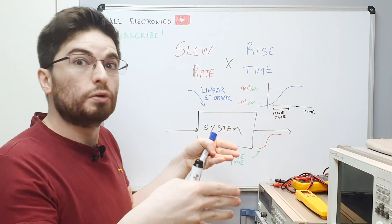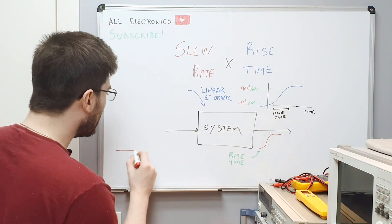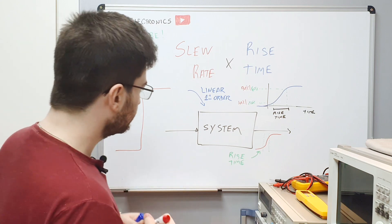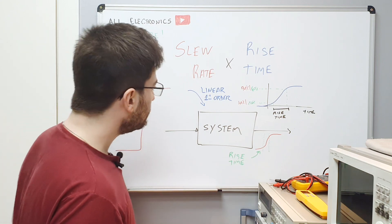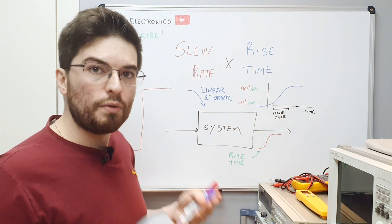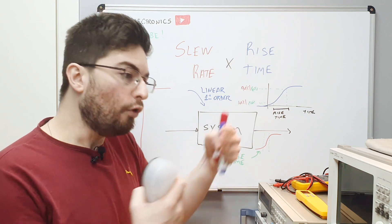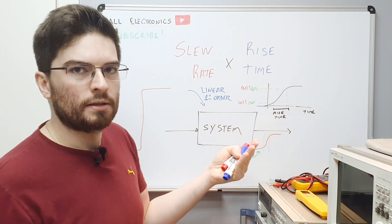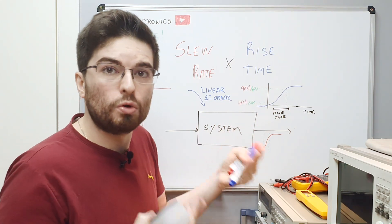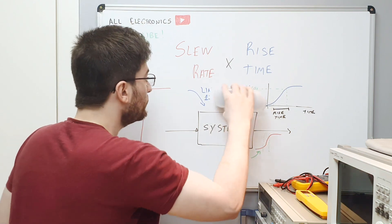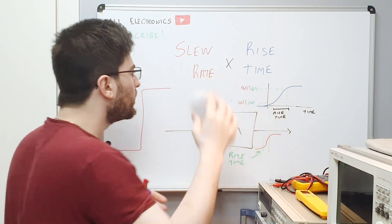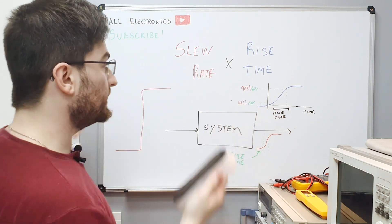Let's put a large signal at the input. Now we're exciting the full voltage range. The circuit will not work as a linear circuit, so this is not a linear first order system anymore.